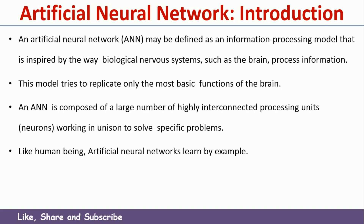Like a human being, for example, a human being learns a particular concept by experience. Initially, with some examples, they may learn and get some knowledge. But as and when they are shown more examples, the human being learns more and more. Similarly, as and when you give more and more examples to an Artificial Neural Network, it will go on gaining more and more knowledge and learning more and more.